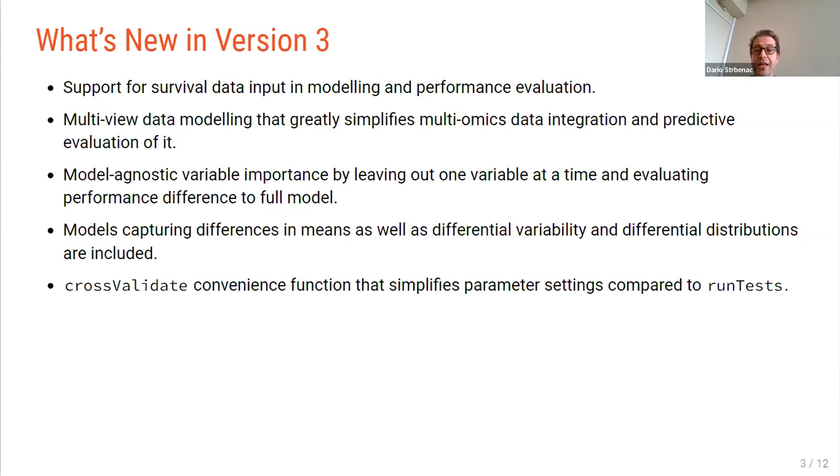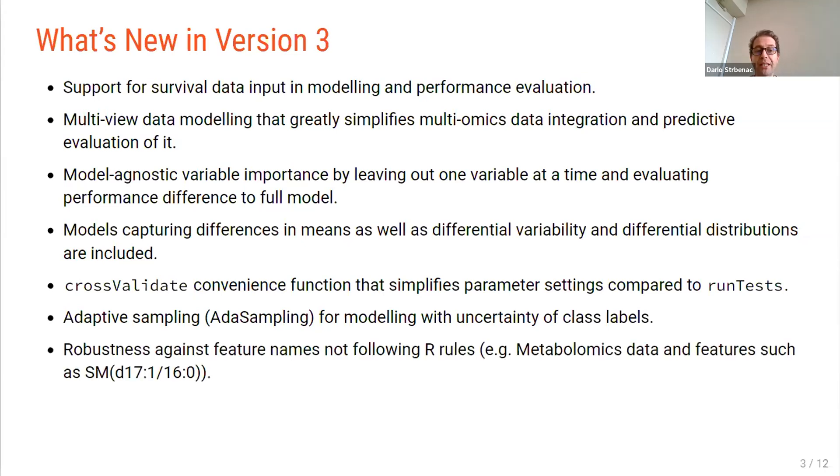There's a cross-validate convenience function that simplifies parameter settings compared to run tests. So now you only need to specify a character keyword, whereas before you had to specify an S4 params object. And what we found in practice was that honors students and PhD students weren't so excited about a BiocParallel params object as, say, Martin Morgan or perhaps Arjun are. There's also adaptive sampling, which helps you model if there's uncertainty in the class labels.